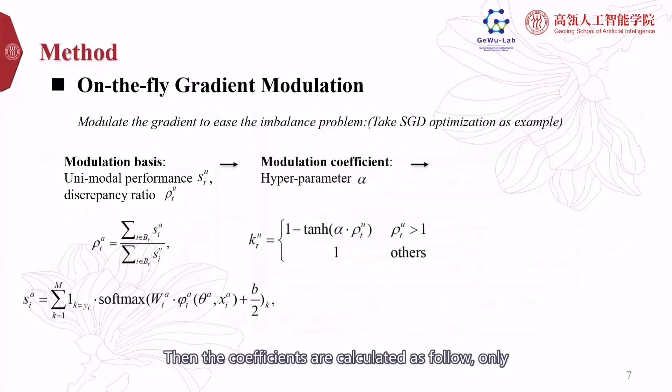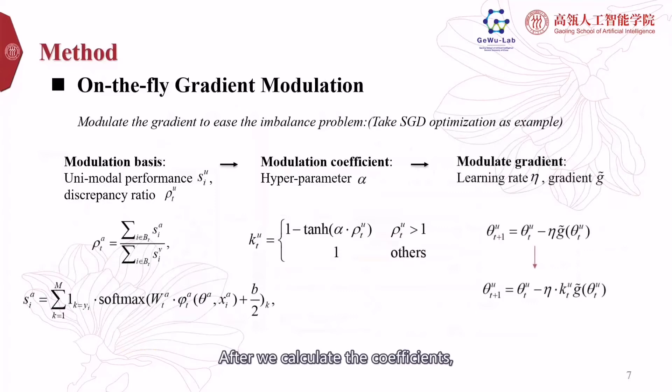Then the coefficients are calculated as follows. Only the coefficient of the dominant modality is smaller than 1, so it can help to slow down its optimizing to leave more training space for the weak one. After we calculate the coefficients, we can modulate the gradient with them as the red formula does.